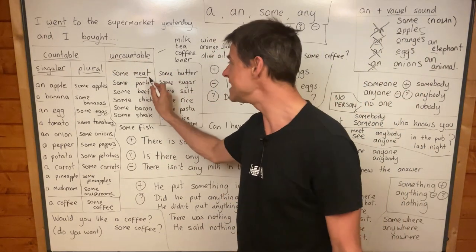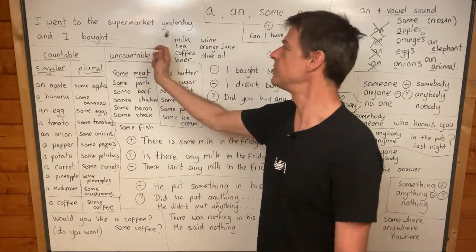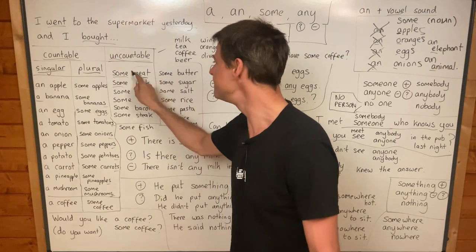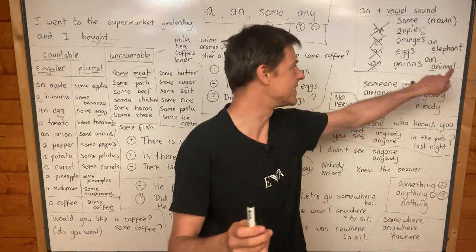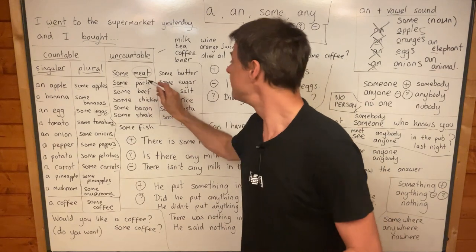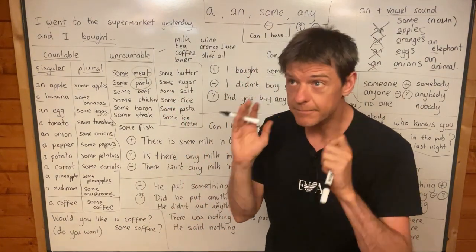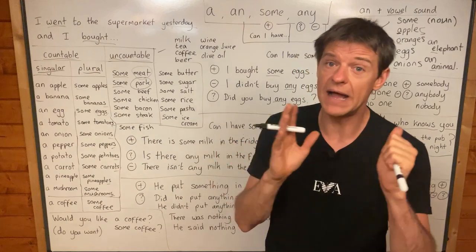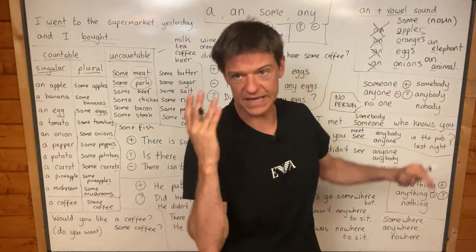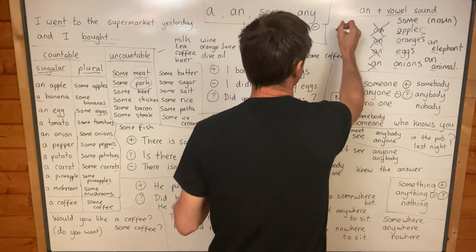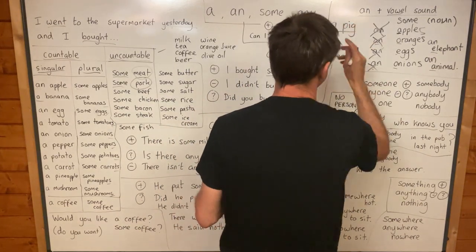With uncountable nouns, we always use 'some.' I went to the supermarket yesterday and I bought some meat — from an animal. Some pork. Pork is meat from a pig.